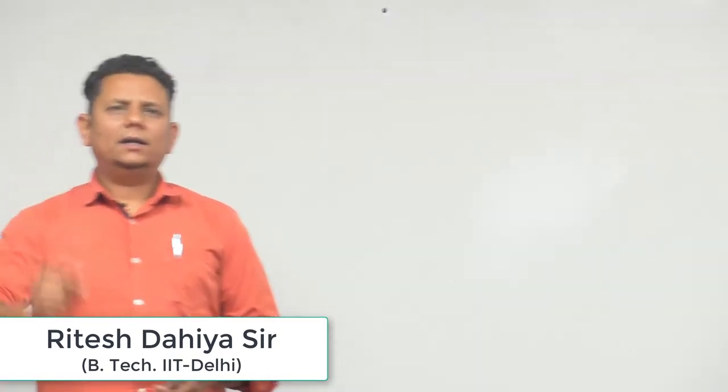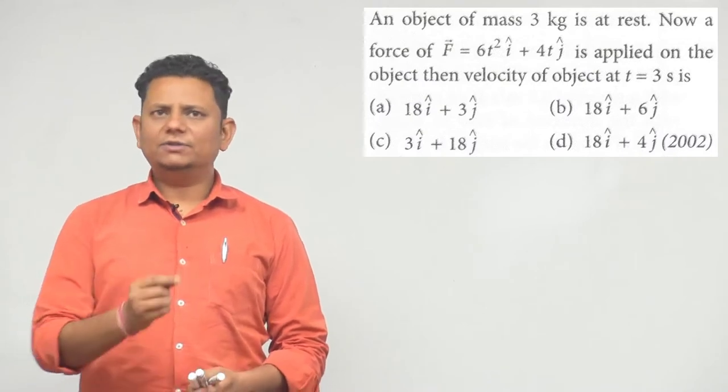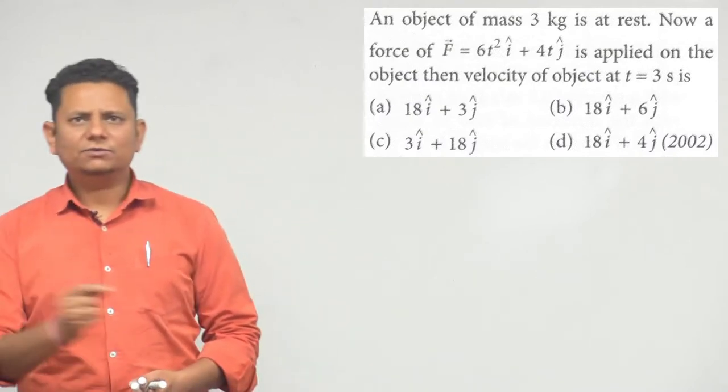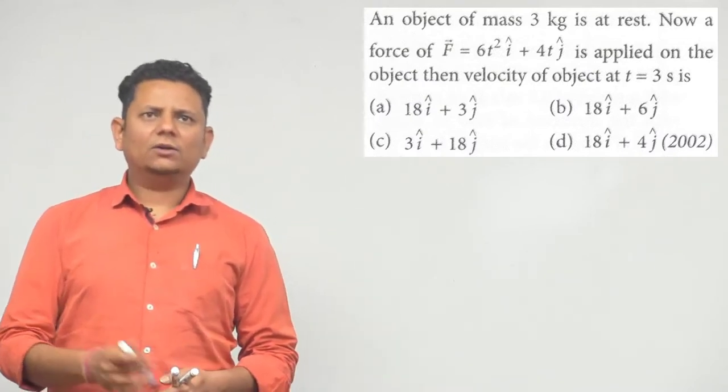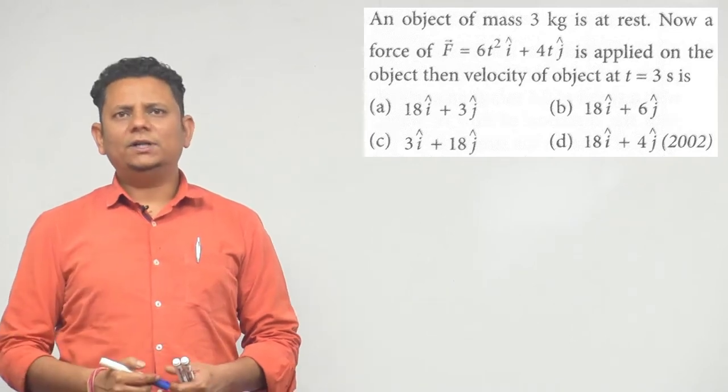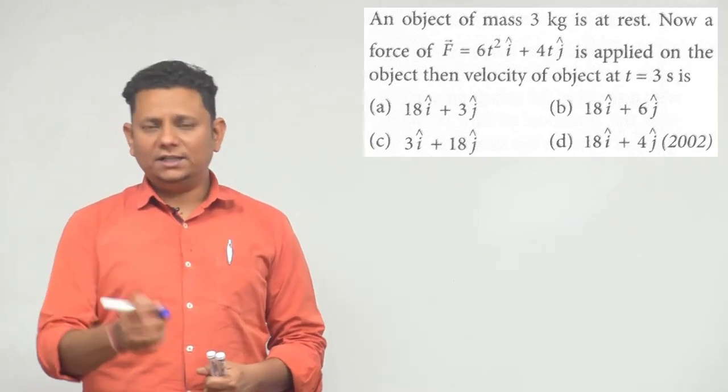Next question. An object of mass 3 kg is at rest. A force F = 6t²i + 4tj is applied on the object, and we need to find the velocity of the object at t = 3 seconds.